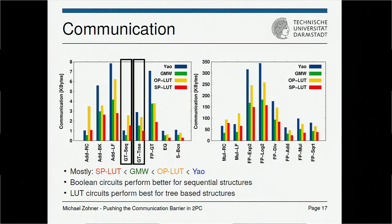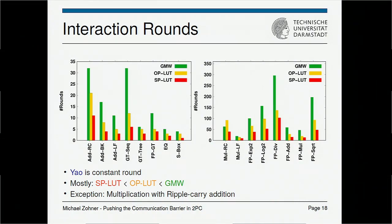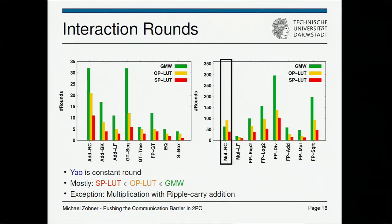Similarly, we compare the number of interaction rounds. We exclude Yao's Garbled Circuits since it's constant round. GMW has the most communication rounds. OPLoad has fewer rounds than GMW, and SPLoad has the smallest number, simply because SPLoad scales much better with the number of inputs than OPLoad. The exception again is multiplication and ripple-carry addition due to the full-adder-based structure.